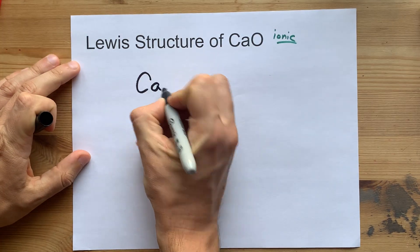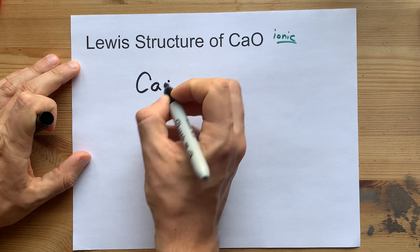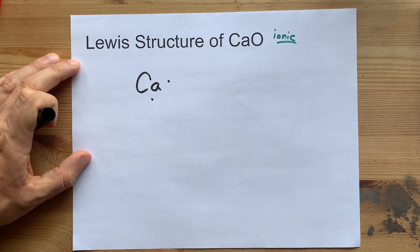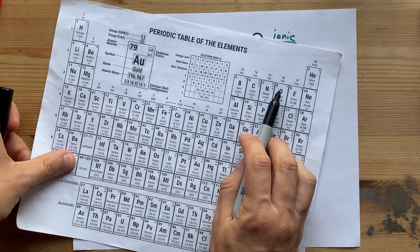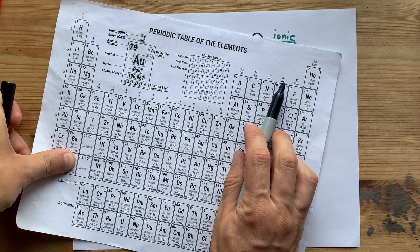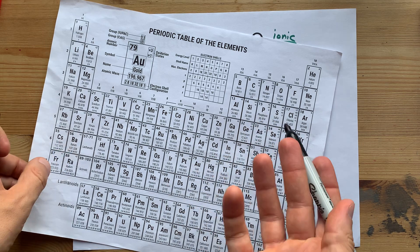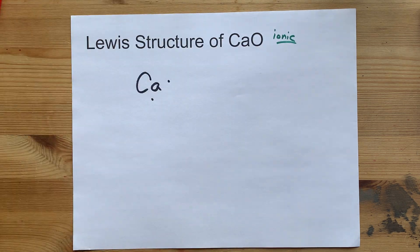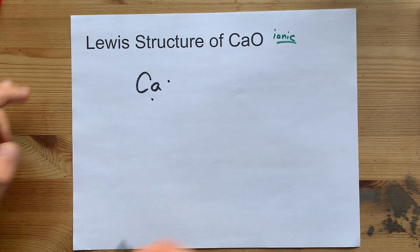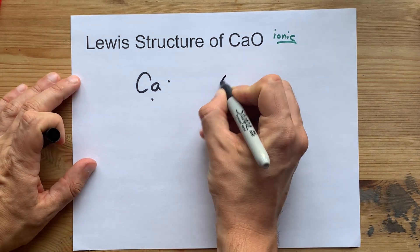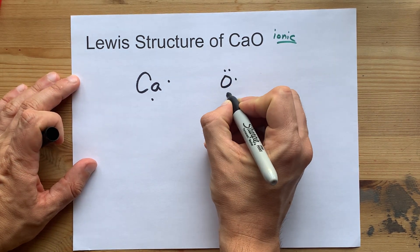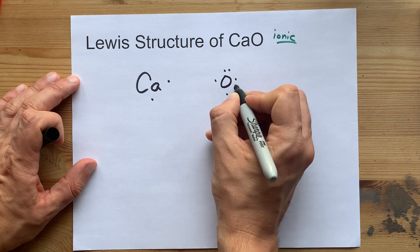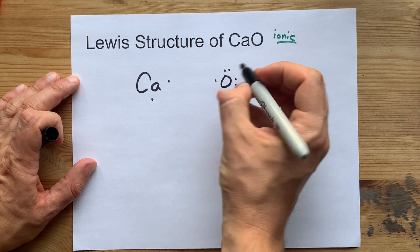So I'm going to draw myself the Ca with one, two valence electrons. Oxygen in group 16 brings six valence electrons with it — it's two short of the full eight that it wants. One, two, three, four, five, six.